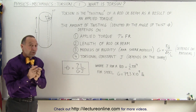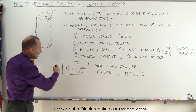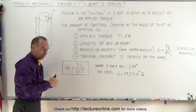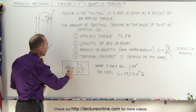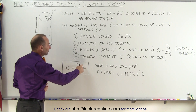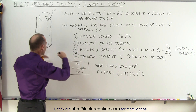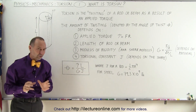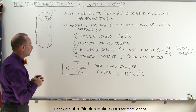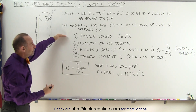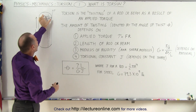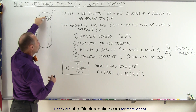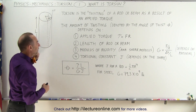The amount of that angle depends on four things. The angle theta, which is typically expressed in radians, is equal to the torque times the length of the rod divided by G times J. We'll talk about those two constants in just a moment. The moment is simply the product of the force applied times the distance r to the point of rotation at the center.